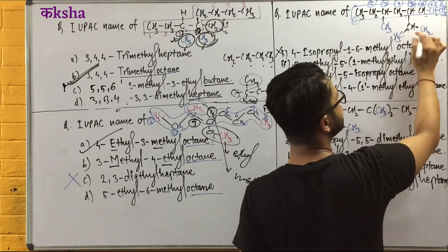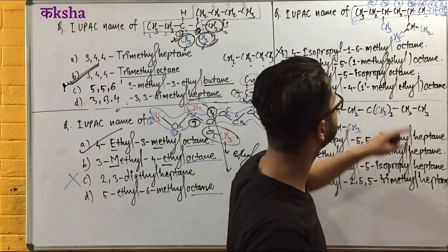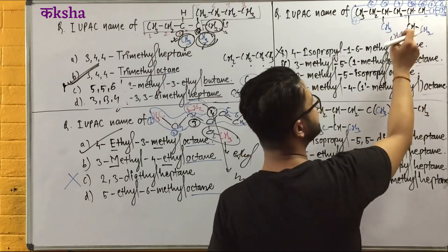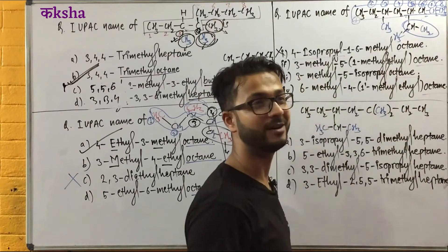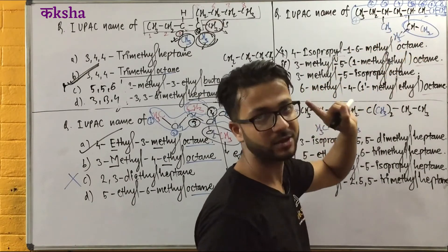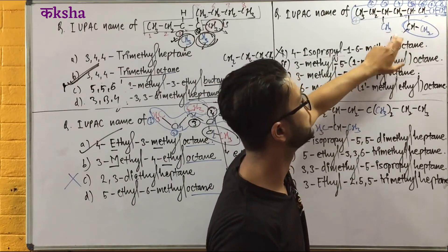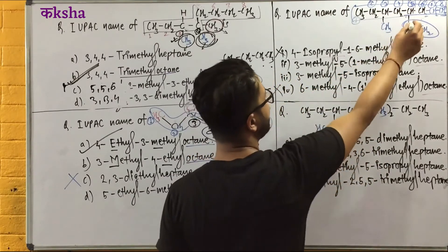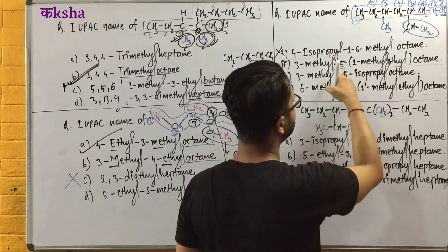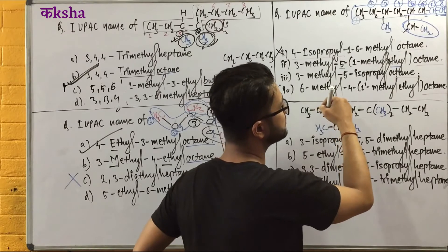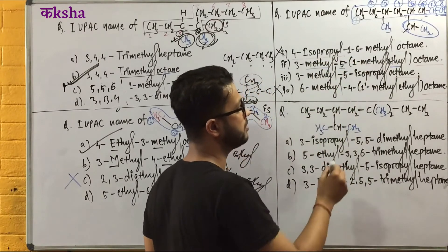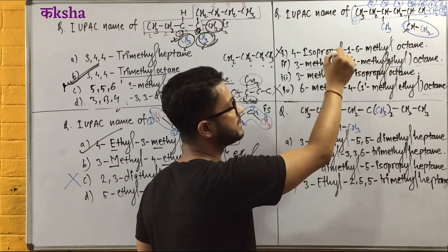Now if you have this — what's your name? 3-methyl, 5-ethyl. But what's your name? Suppose you have this longest and continuous carbon chain — methyl. Now the branch is the name of that branch — in 5-methyl, in 5-methyl, this is ethyl, then in 3-methyl, and this in 3-methyl. In 3-methyl, and 5 is ethyl.